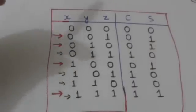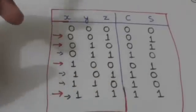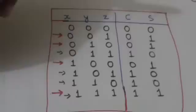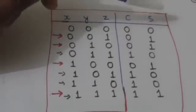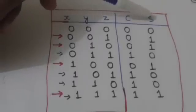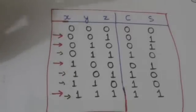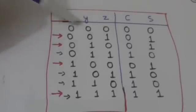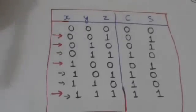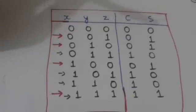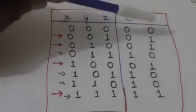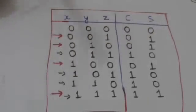This is the truth table which represents the relationship between input variables and output variables. X, y, and z are the input variables; C and S are the output variables. C is the symbol for carry, S is the symbol for sum. S represents the least significant bit of the sum of x, y, and z; C represents the carry produced. When all three bits x, y, and z are 0, their sum is 0, so S = 0 and C = 0. When one bit is 1 and the other two are 0, the sum is 1, so S = 1 and C = 0 because no carry is produced.